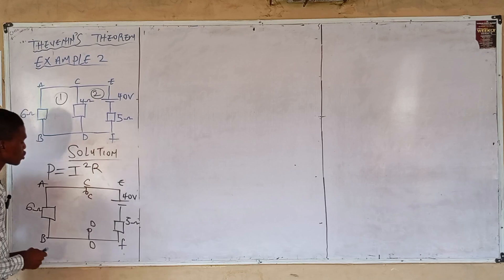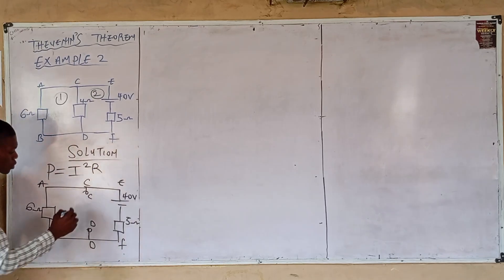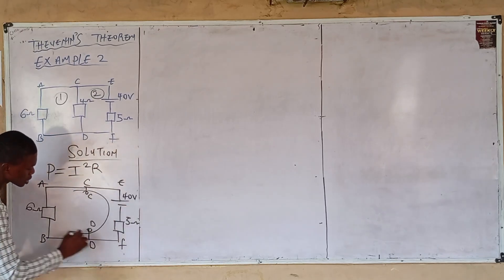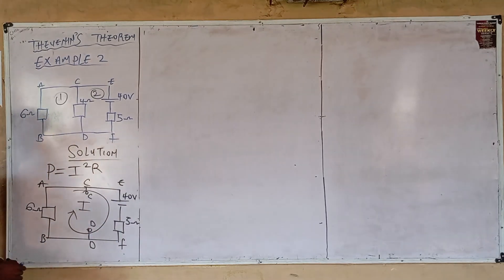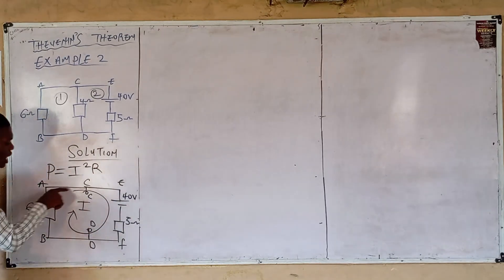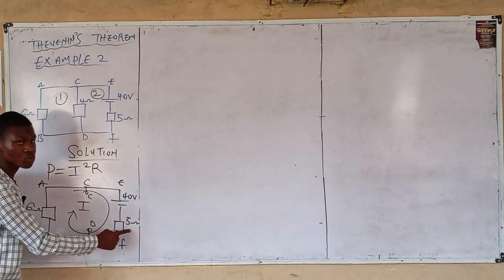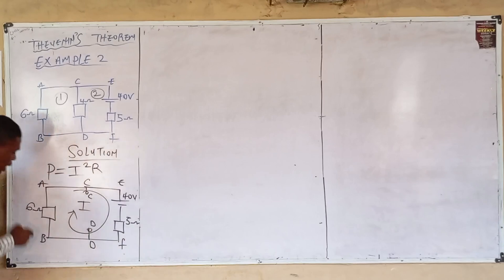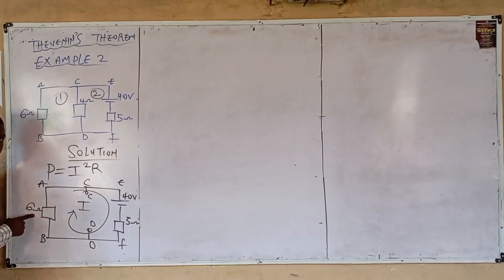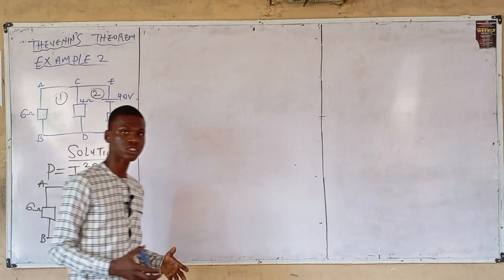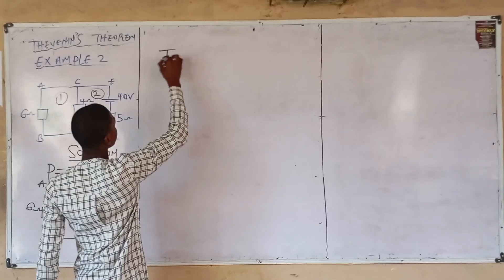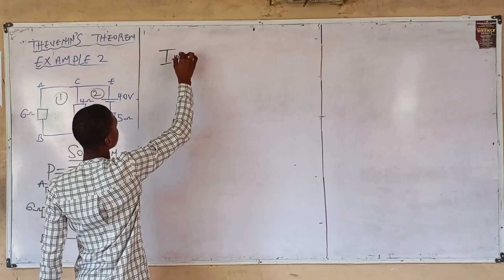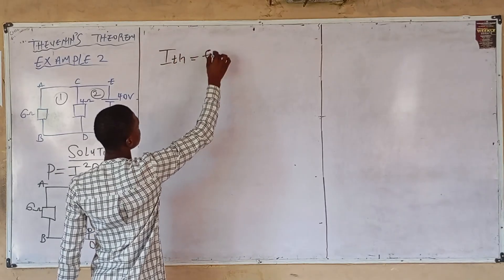We now have one circuit. The current flowing through this circuit — let's call it I — flows through the 5-ohm resistor and also through the 6-ohm resistor. The Thévenin current is defined by the formula: I_Thévenin equals E divided by the total resistance.